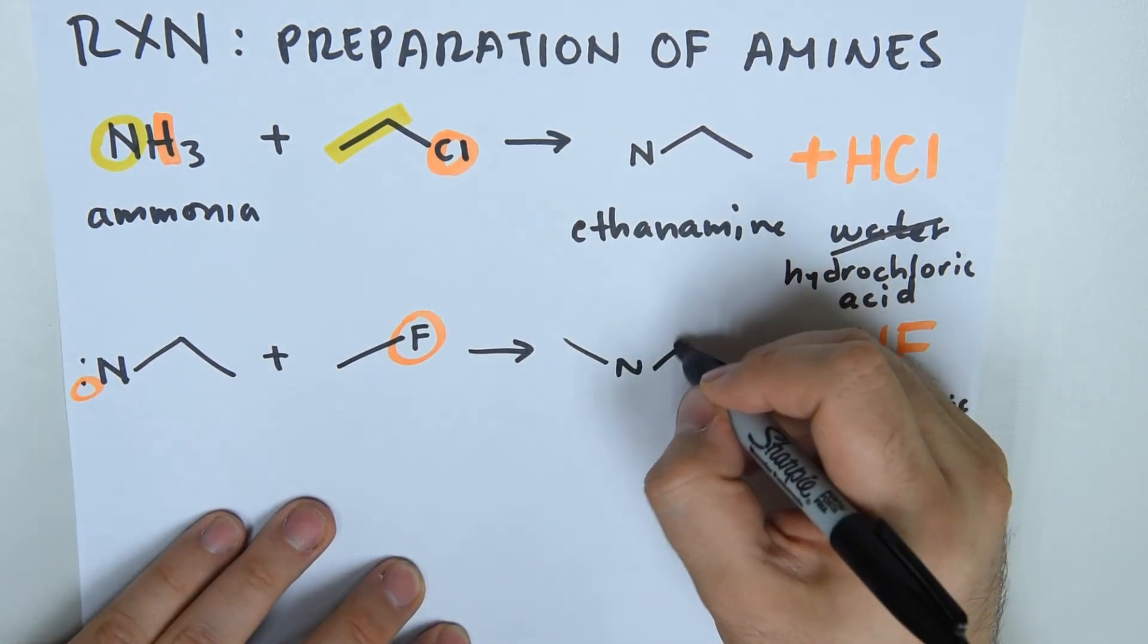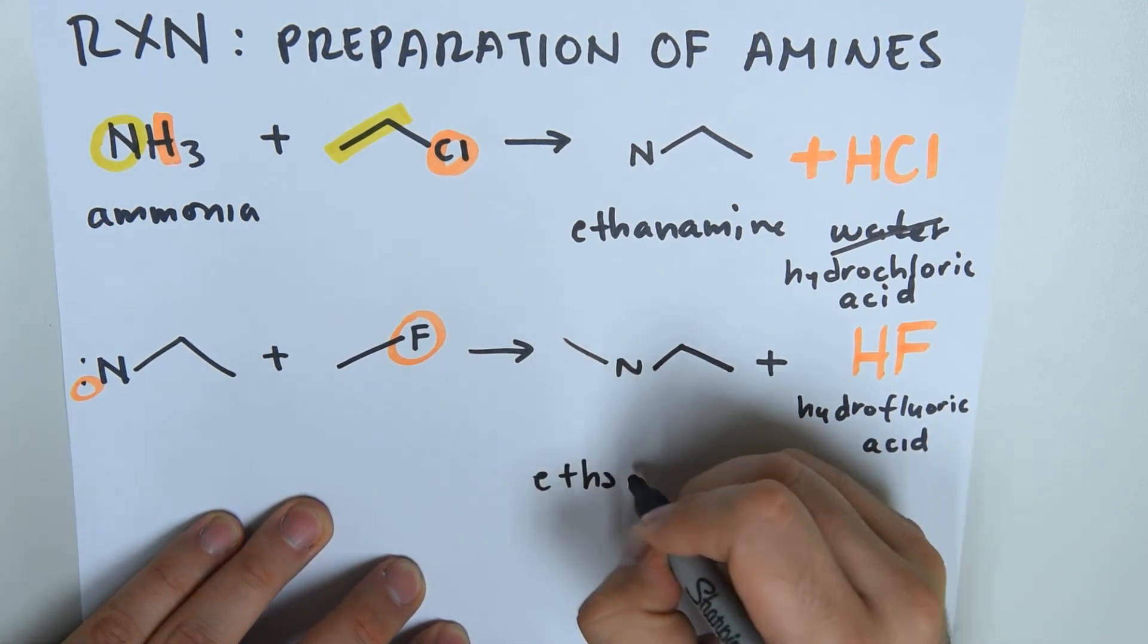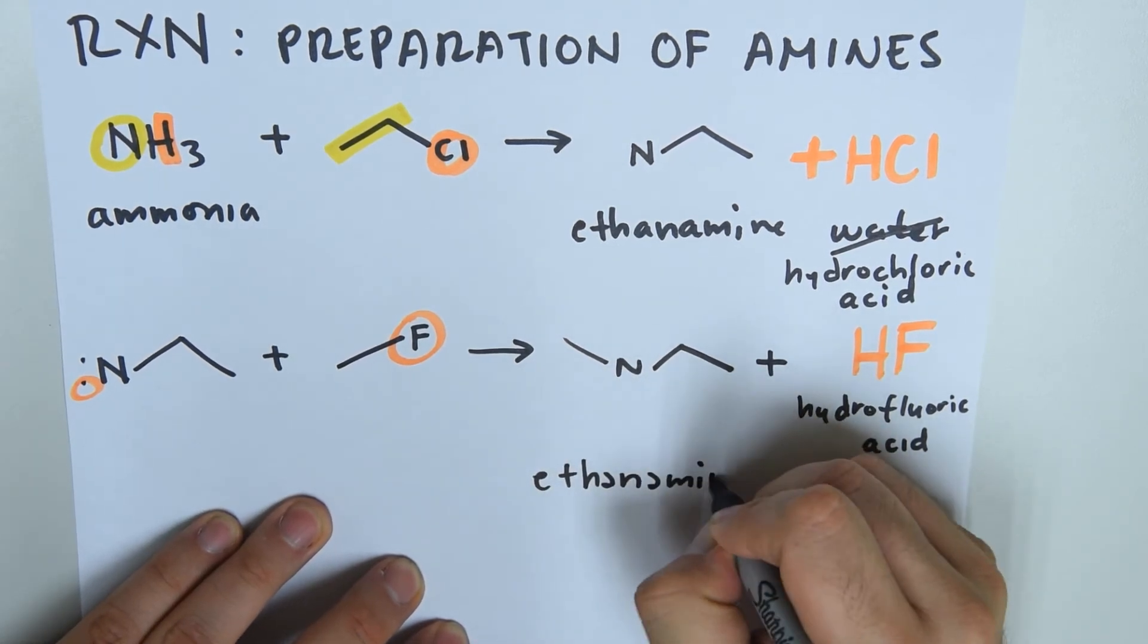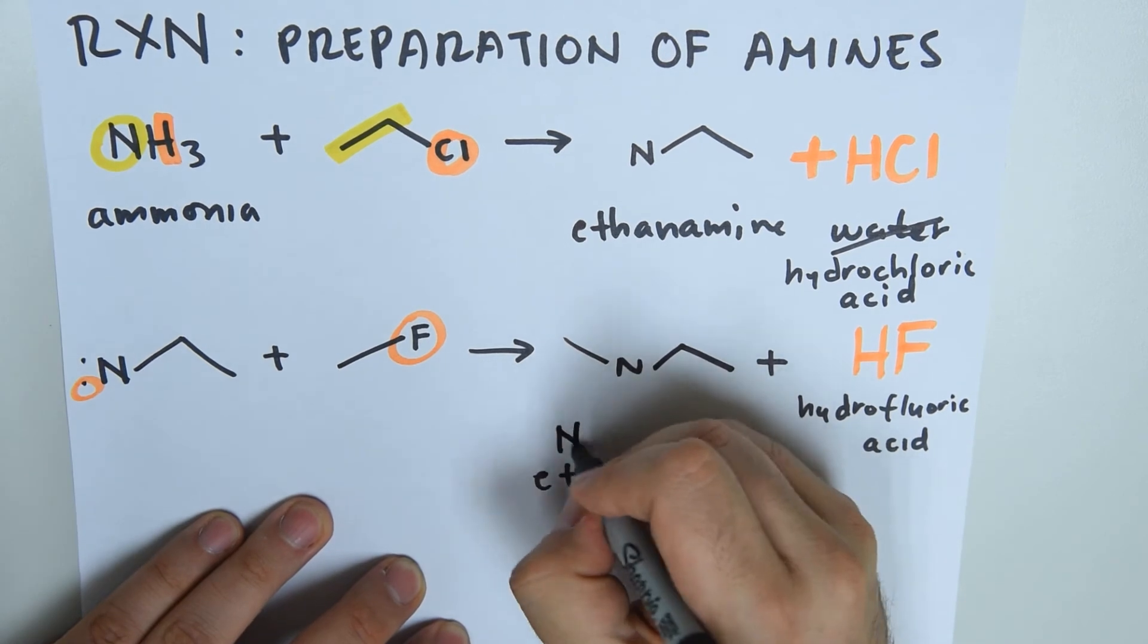We find the longest chain, one, two. So this is ethanamine. And at letter N, we have methyl.